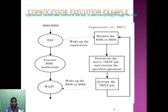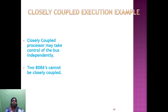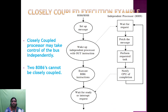The CPU checks the TEST signal: if it is low, execution continues; if not, execution stops waiting for the coprocessor. The coprocessor cannot take control of the bus — it does everything through the CPU. The 8086 or 8088 is the main processor, and the coprocessor is connected to it. The SEAC signal wakes up the coprocessor and asks it to activate, and when activated the host (8086) reactivates and executes the specific operation.